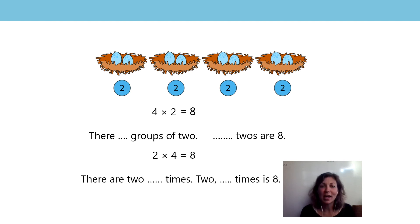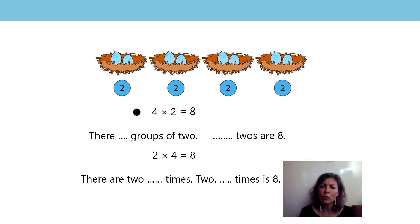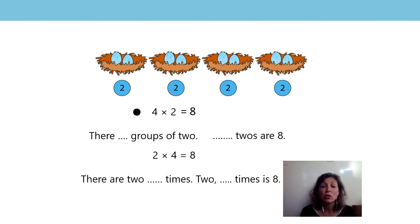Did you do this? 2, 4 times is equal to 8. There are 2, 4 times. 2, 4 times is 8. So I want you to tell me now, in this equation, what does the 4 represent? That's right, it's the 4 groups. What does the 8 represent? That's right, the 8 represents how many eggs there are altogether. So what does the 2 represent? Yes, the 2 represents the 2 eggs in each group.